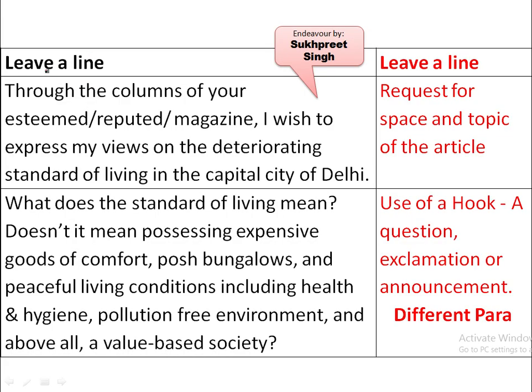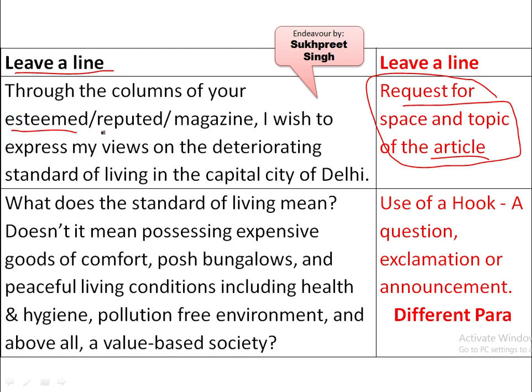After writing the subject, leave another line. Then write the request for space and introduce the topic. For example: 'Through the columns of your esteemed newspaper' — you can use 'reputed' or 'esteemed,' or a better adjective if you have one — 'I wish to express my views on the deteriorating standard of living in the capital city of Delhi.' In this introductory paragraph, you are requesting them to publish your views and introducing the topic you are going to discuss.